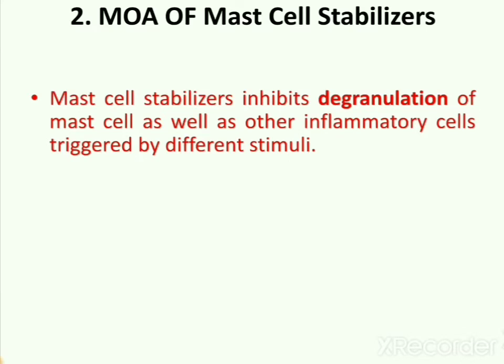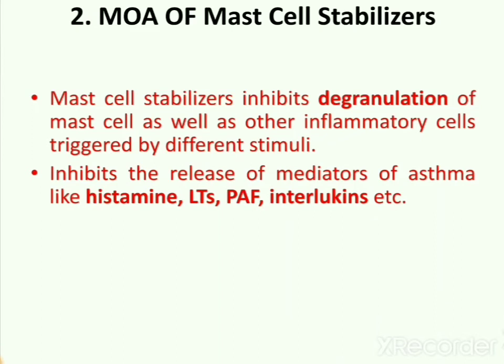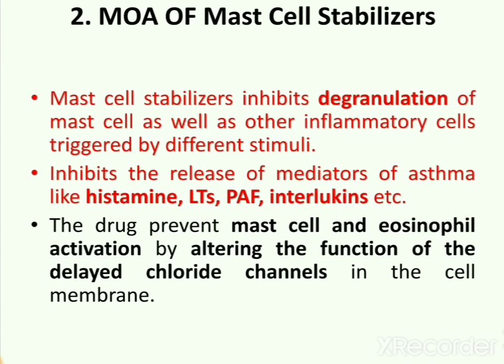In mast cells, histamine is released from histamine-containing granules. Mast cell stabilizers inhibit the release of mediators of asthma like histamine, leukotrienes, platelet-activating factor, and interleukins. The drugs prevent mast cell and eosinophil activation by altering the function of delayed chloride channels in the cell membrane. Here, eosinophil is a specialized cell of the immune system — it is a pro-inflammatory white blood cell.